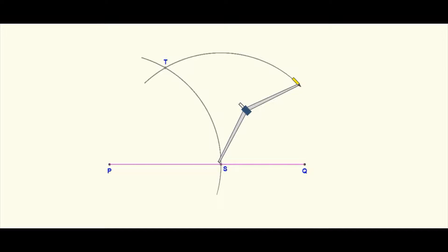Where both arcs intersect each other, call that point T. Now, without changing the radius of your compass, place the compass point at point T and scribe an arc to intersect the previous arc. At that intersection, call it point R.